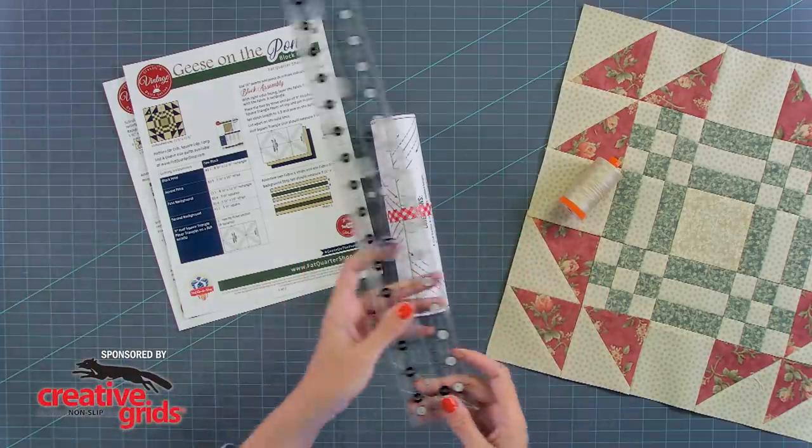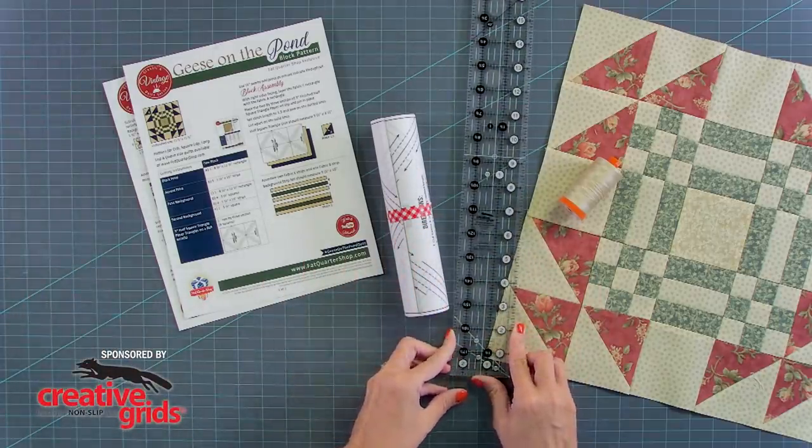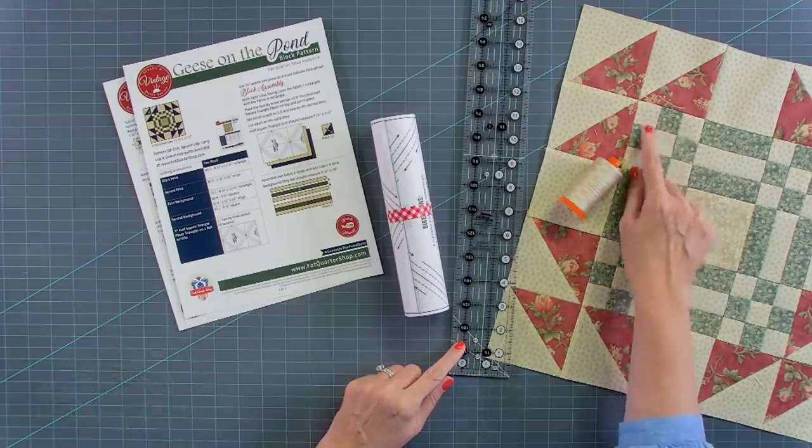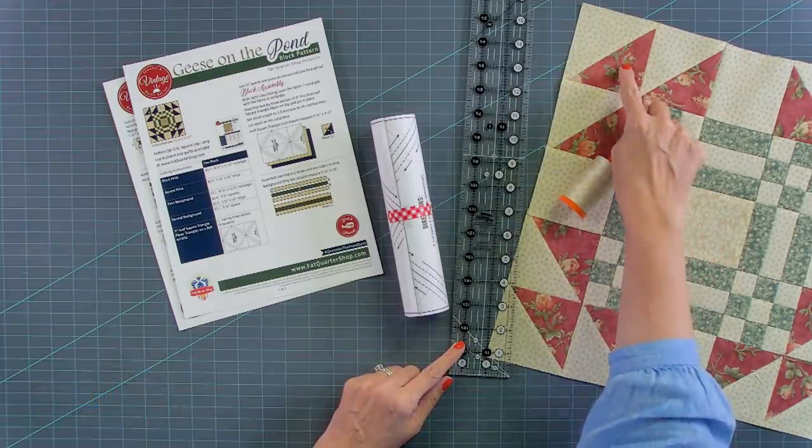We're going to be using the Creative Grids 2.5 by 18.5 inch ruler to make our strip sets and of course for our half square triangles we're going to be using triangle papers.